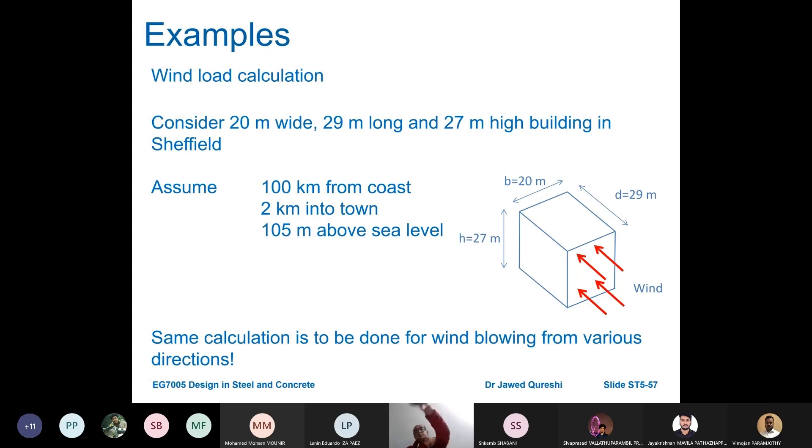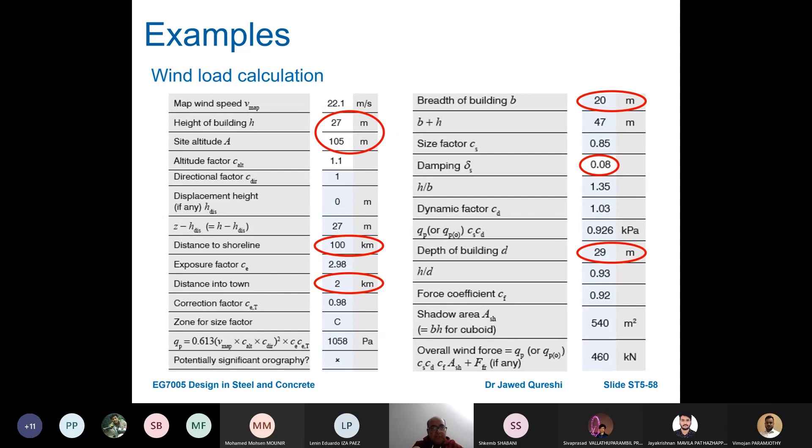Height of the building is 27, site altitude is 105, distance to shoreline is 100 and distance to town is 2. Breadth of the building is 20. Damping coefficient we assume 0.08 for buildings. H over D we can work it out, depth of the building is 29.